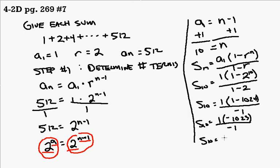So S sub 10 is equal to negative 1023 over negative 1. Final answer, the 10th partial sum is equal to 1023.